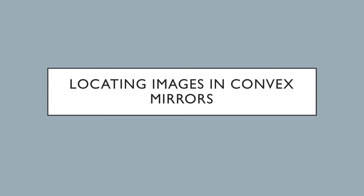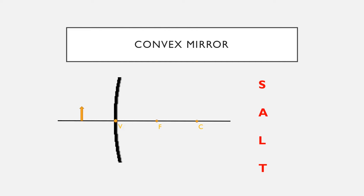In this video we're going to take a look at how to locate images in convex or diverging mirrors. So unlike the previous example of concave or converging mirrors, the convex or diverging mirror only has one possibility in terms of the SALT table.